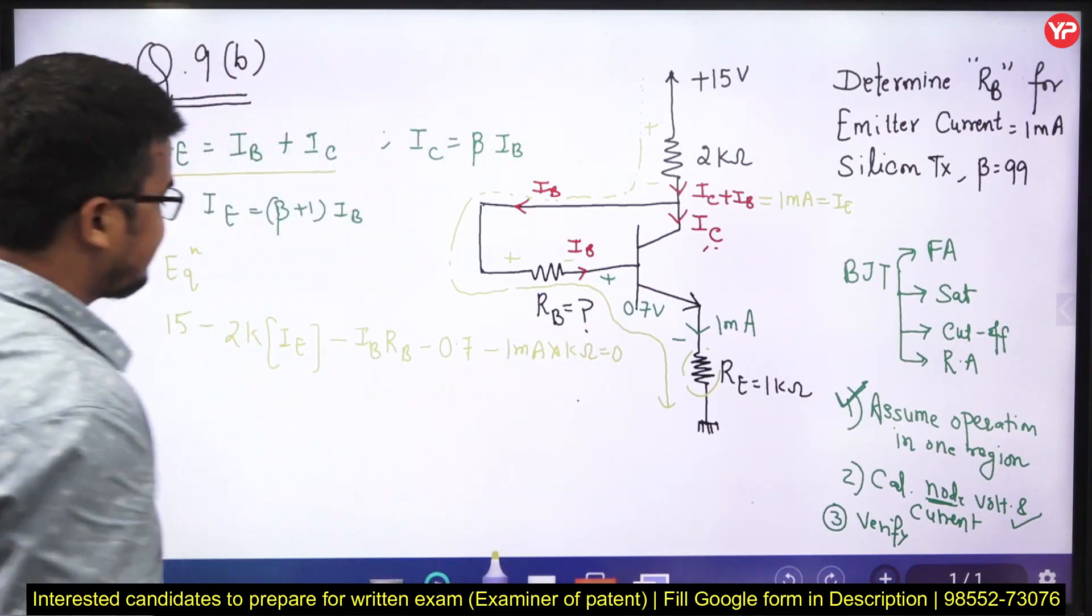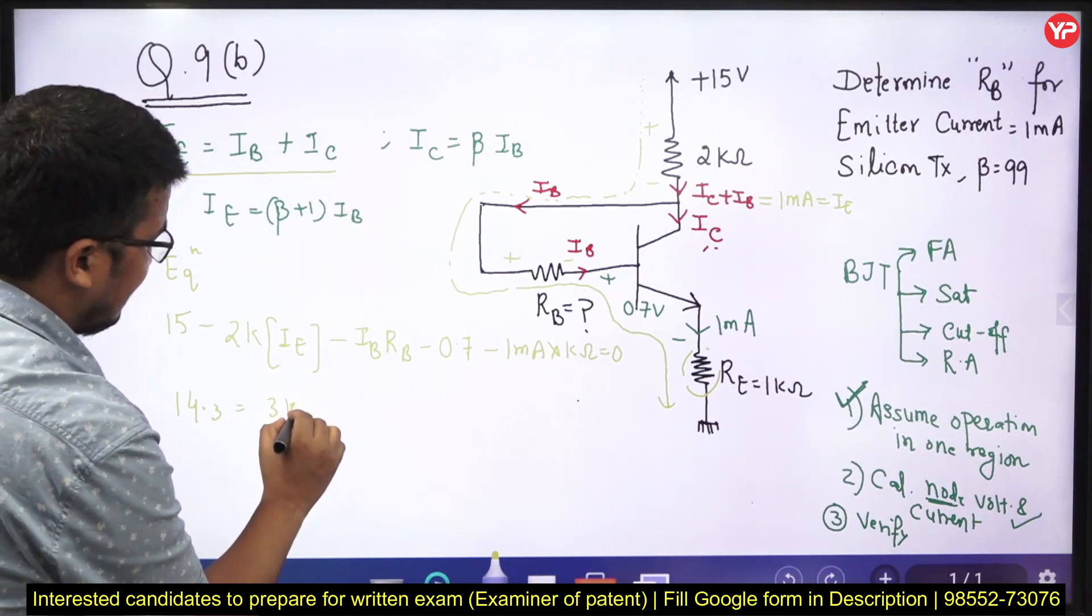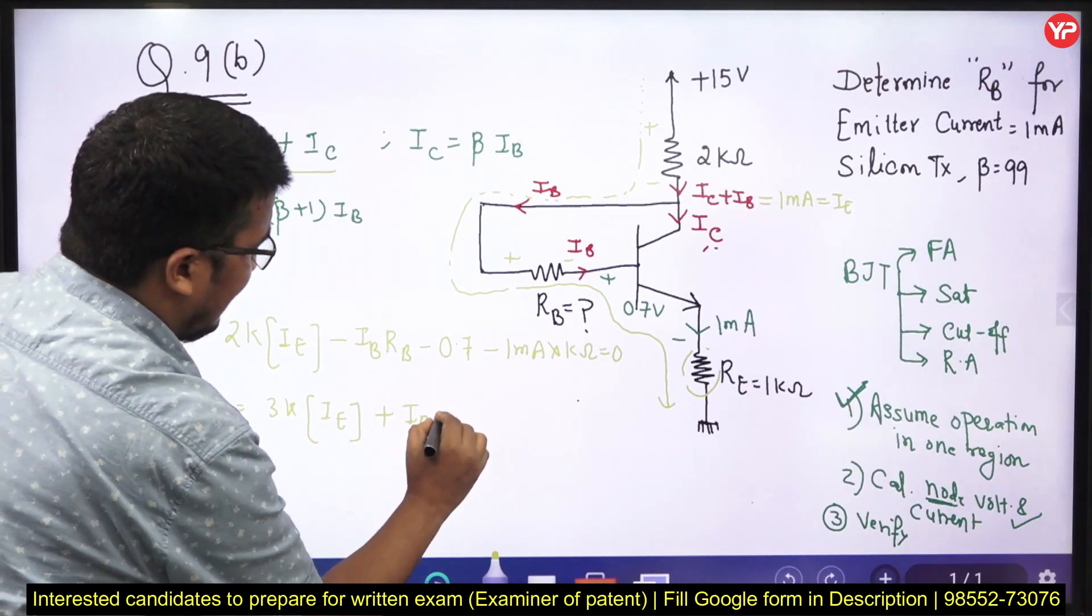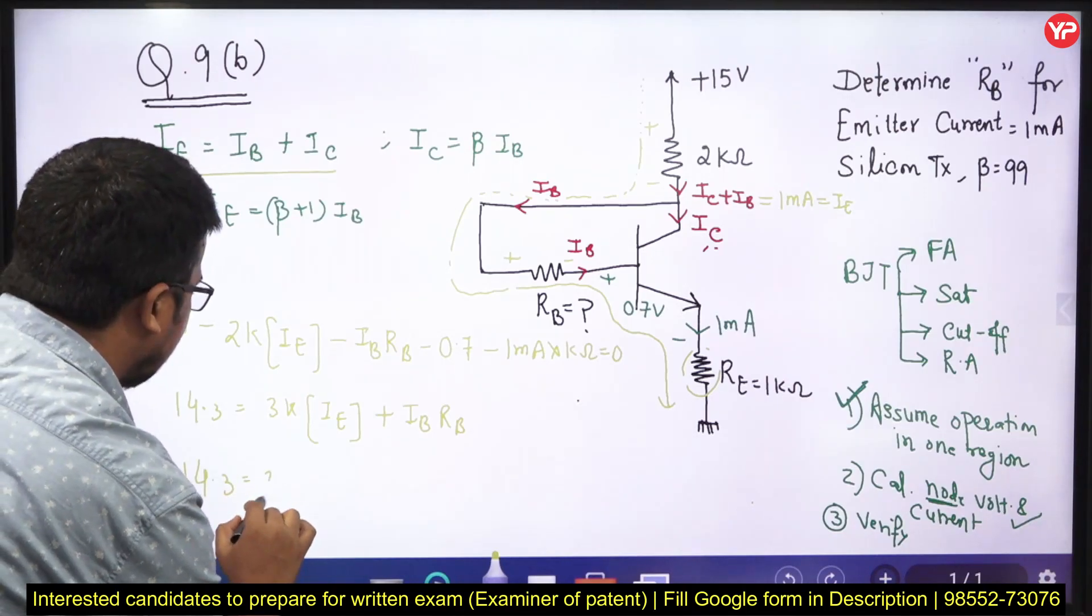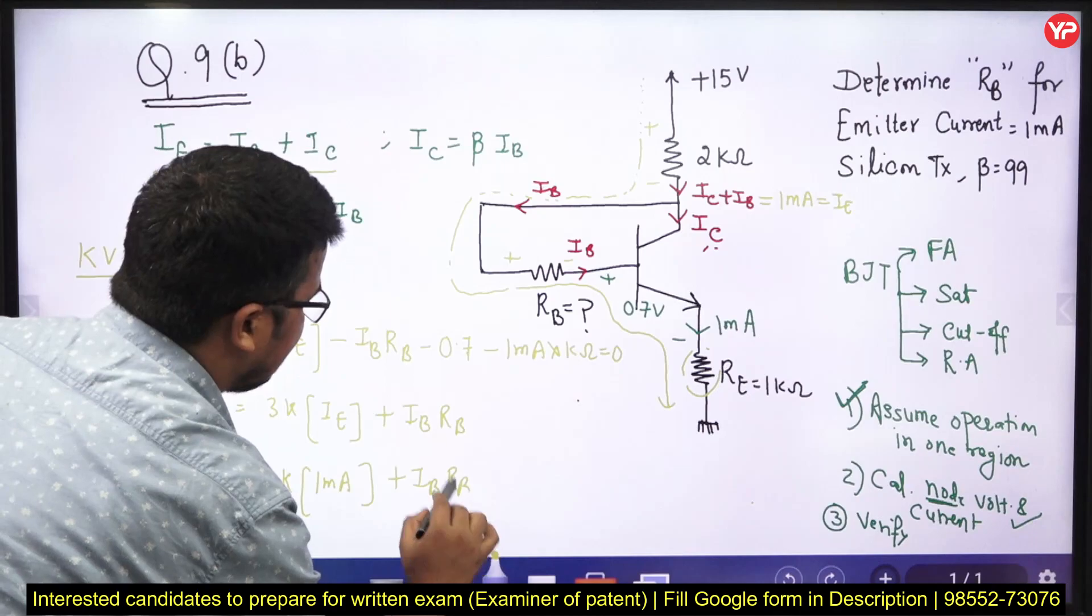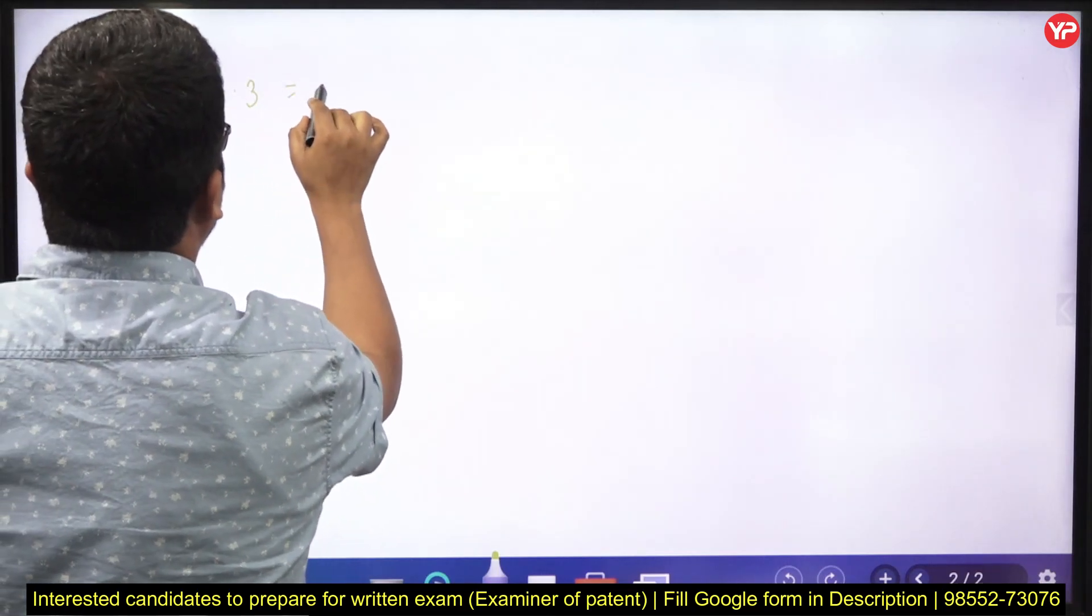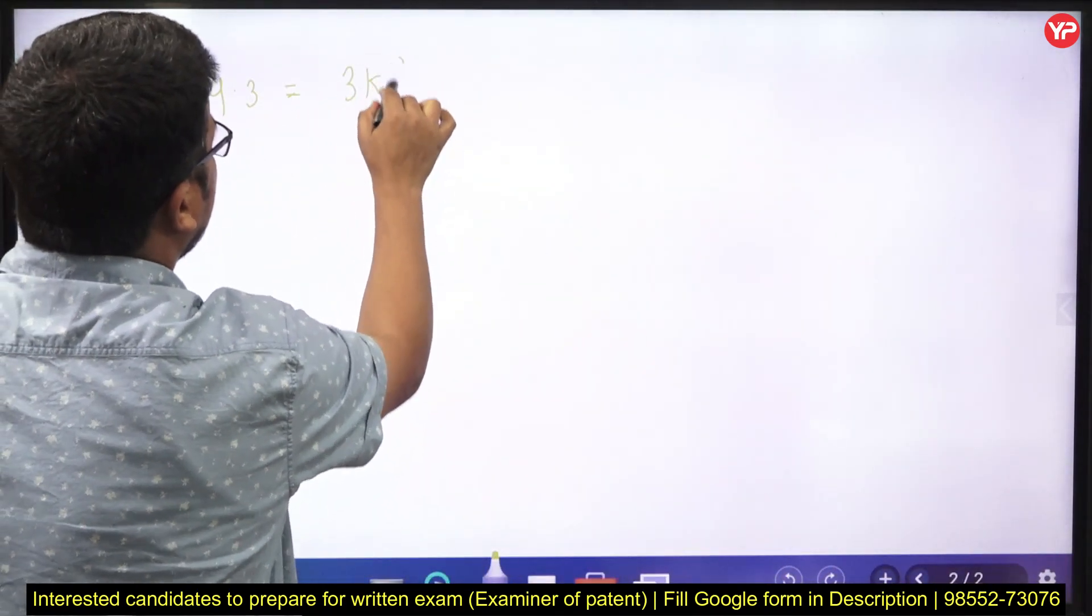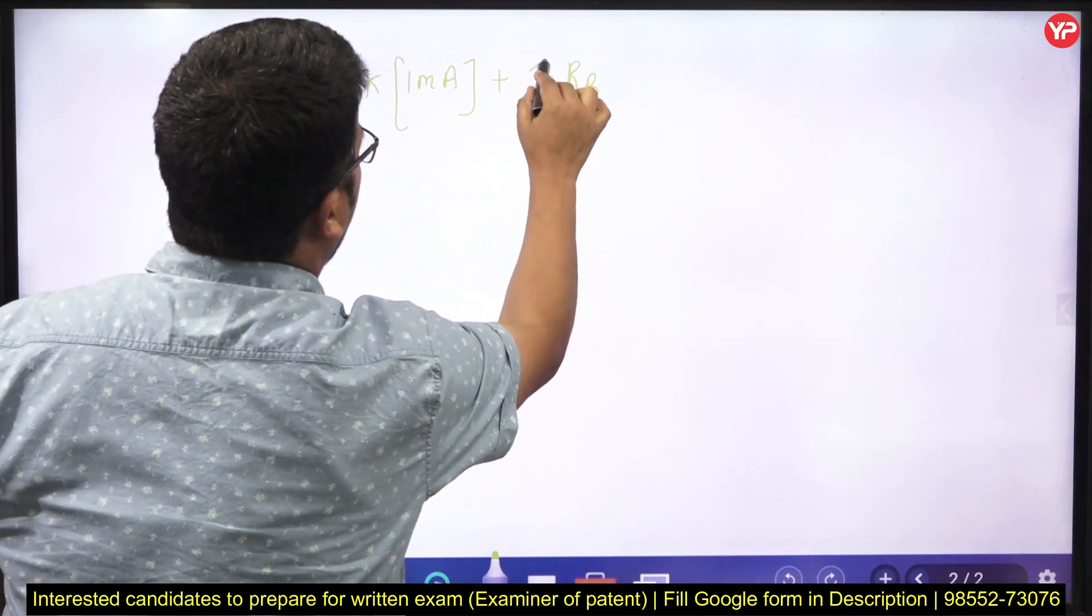This can be written as equal to 0. If I start solving it, I will get 14.3, please check it, is equal to 3K inside of IE. Do not skip the step in the conventional answer. Plus IBRB. And if I am doing this thing, I know already IE is given as 1 milliampere.